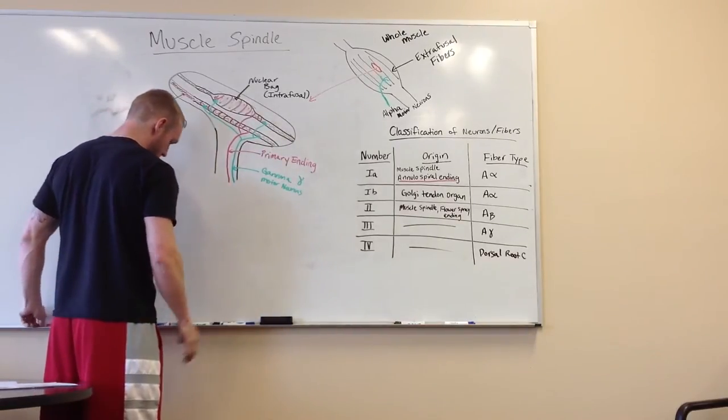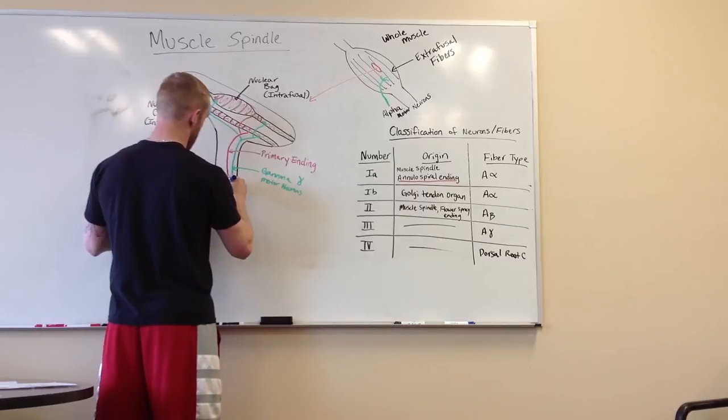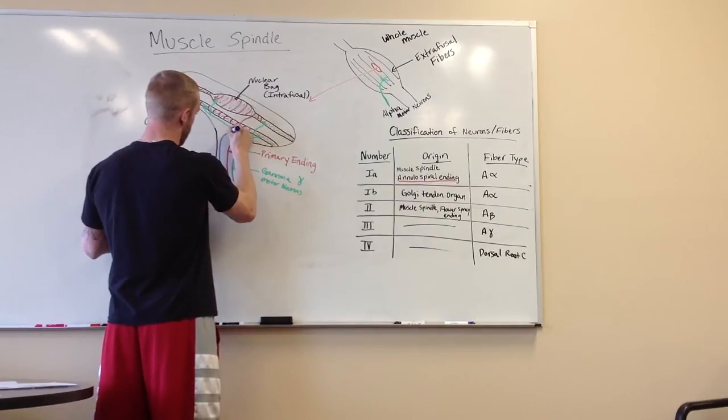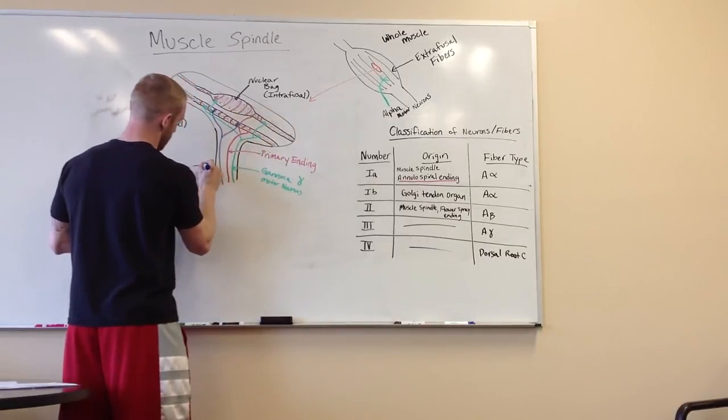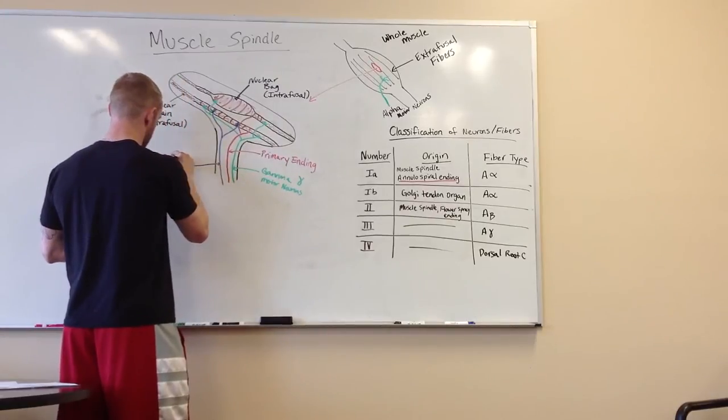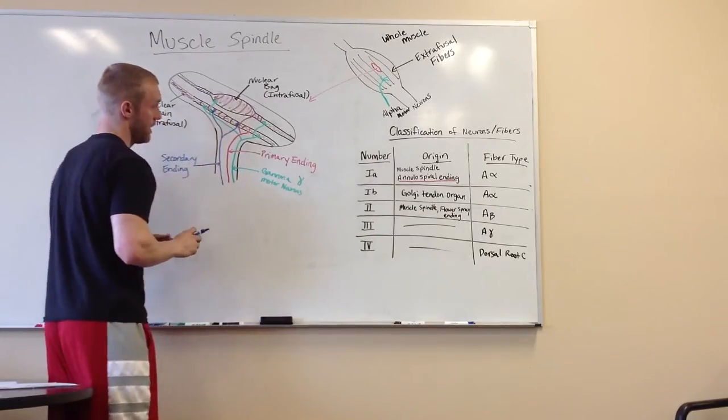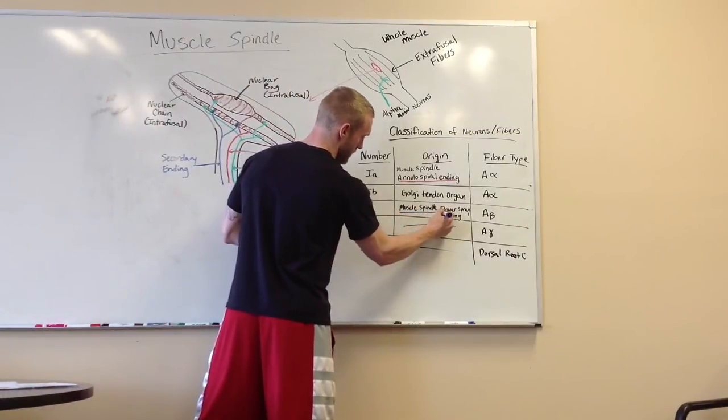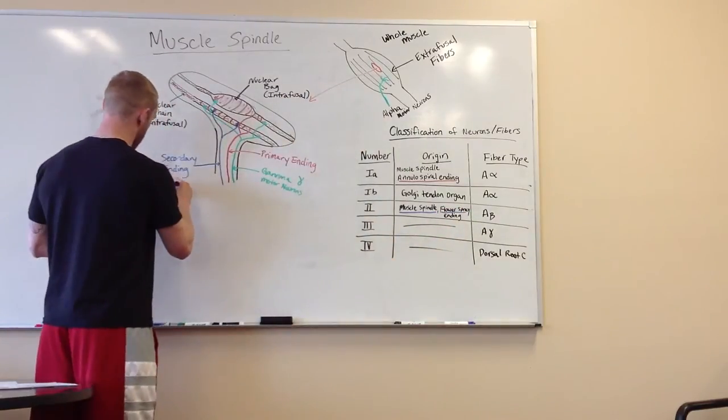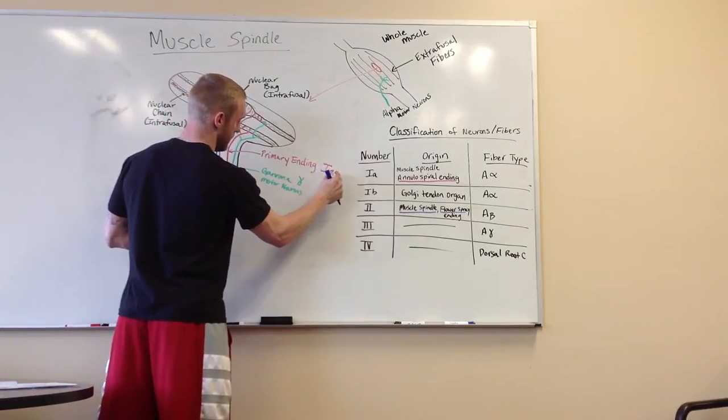But we're not done, because the nuclear chain gets a little more loving. And he's going to get our secondary. All right. Now our secondary is going to be our type 2. I should write that down. I should even write that down. These are going to be 1.